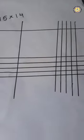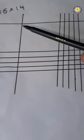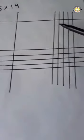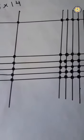First draw one slanting line. Next, 5 slanting lines. Next number, 14. So again draw one slanting line. Next, 4 slanting lines. Next, mark the meeting points.